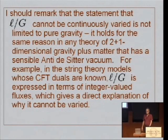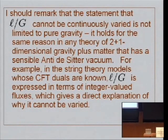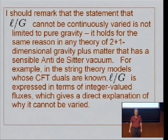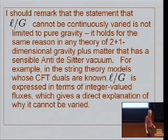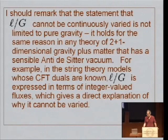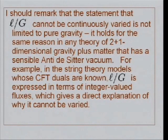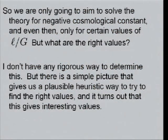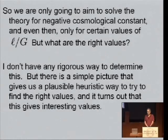Now, incidentally, the remark that L over G can't be continuously varied isn't special to pure gravity. It holds in any theory of 2 plus 1 dimensional gravity plus matter that leads to an anti-de Sitter vacuum. For example, in the string theory models whose CFT duals are known, L over G is expressed in terms of integer valued fluxes, which gives a direct explanation of why it can't be continuously varied. It's determined in terms of integers. So we're only going to aim to solve the theory for negative cosmological constant, and even then only for certain values of L over G.